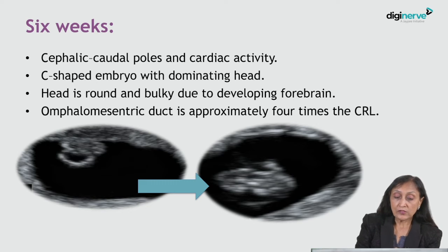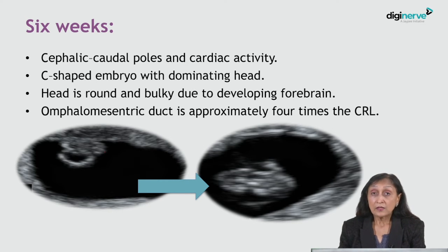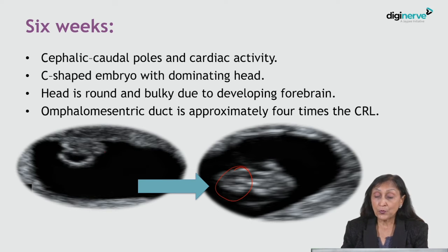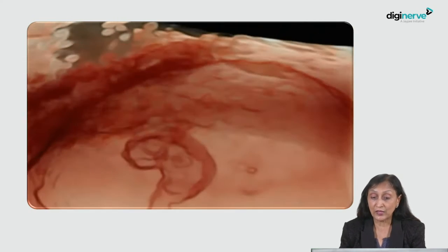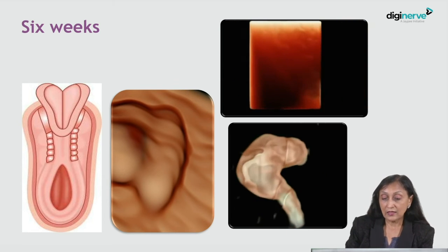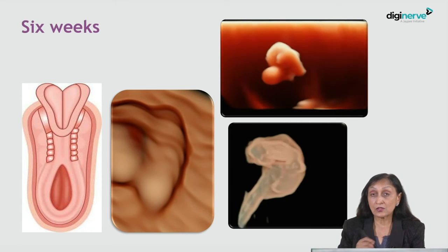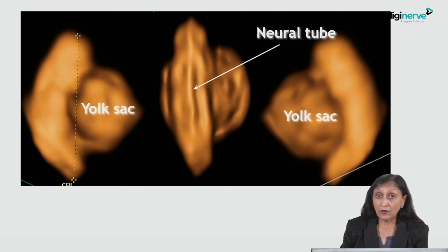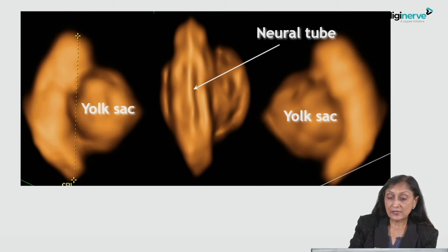At six weeks, the cephalic and caudal poles appear and cardiac activity also becomes visible. The embryo gradually becomes C-shaped as it grows; the head is round and bulky due to the developing forebrain, and the omphalomesenteric duct is approximately four times the crown-rump length. The embryo which was straight has started curving, chiefly due to head development. During this period, the neural groove documented a week earlier now appears as a neural ridge.